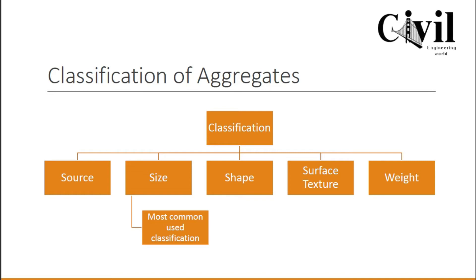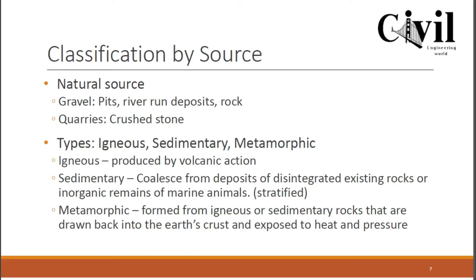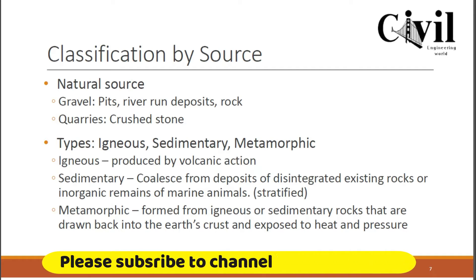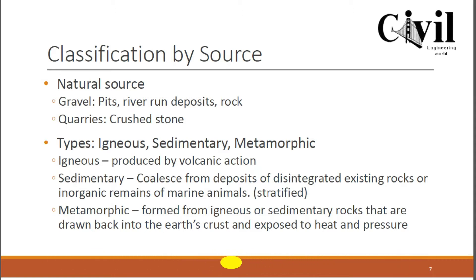We are going to classify the aggregates on the basis of source. Aggregates come from different sources — for example, gravels and other aggregates of different sizes come from pits, river run deposits, and can also be extracted from rocks. We can also get aggregates from crushed stones.